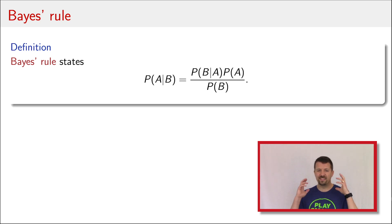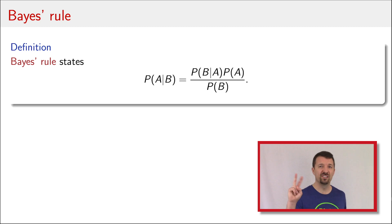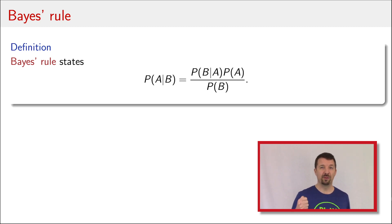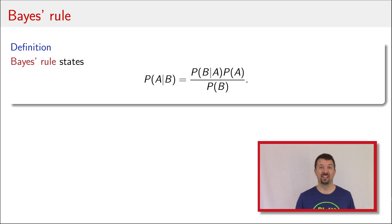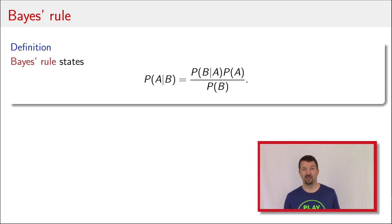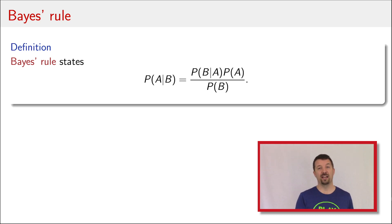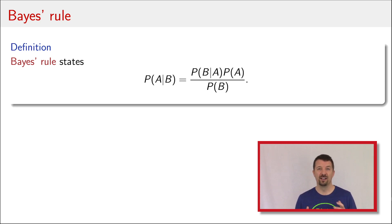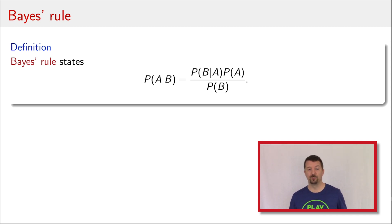This is what we get for Bayes' Rule: the probability of A given B is the probability of B given A times the probability of A, divided by the probability of B. One way to think about Bayes' Rule is that we're trying to switch the conditioning bar. We started with the probability of A given B on the left side, but on the right side we have the probability of B given A. Anytime you need to switch the conditioning bar, that's when Bayes' Rule is extremely helpful.